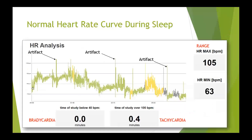Here's a heart rate graph that's normal. There's a little bit of artifact — three or four spikes sticking out of nowhere — and in this case it really doesn't have an impact on our interpretation. There's a little bit of tachycardia, but that's very likely due to artifact. This patient's heart rate range and variability looks normal overall.